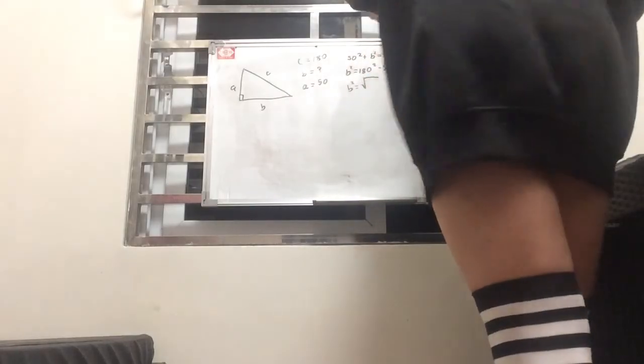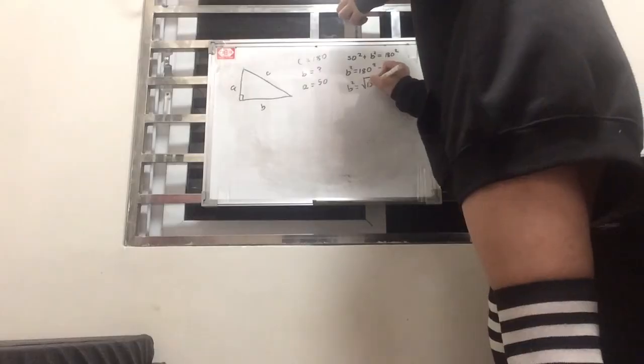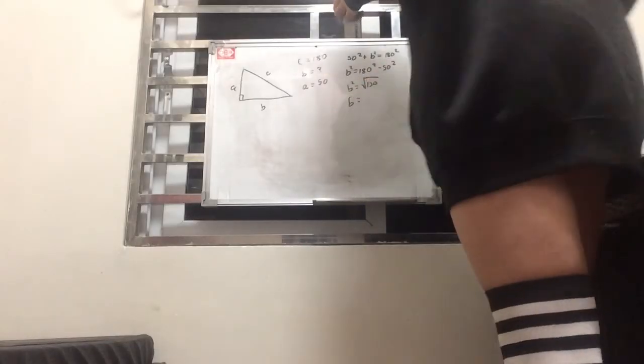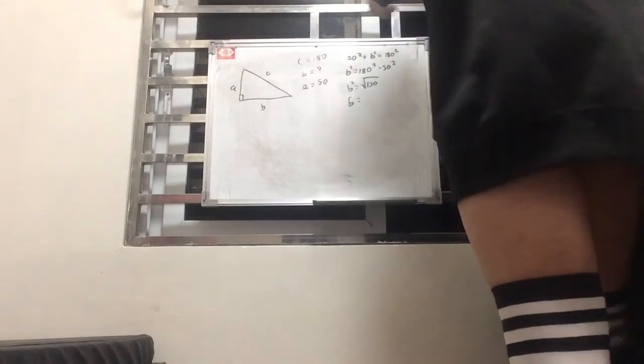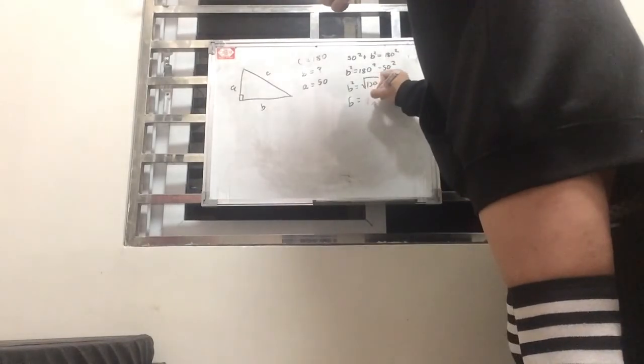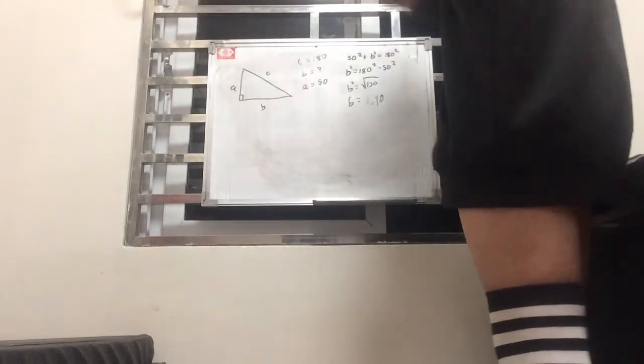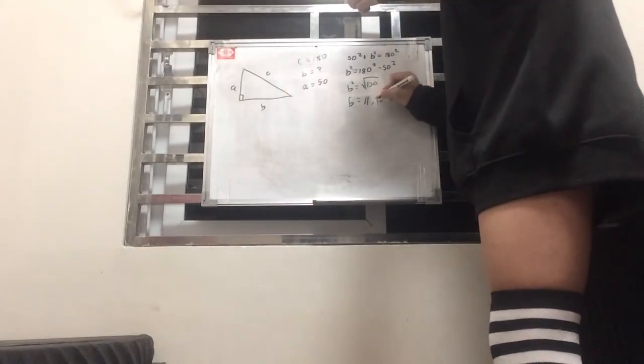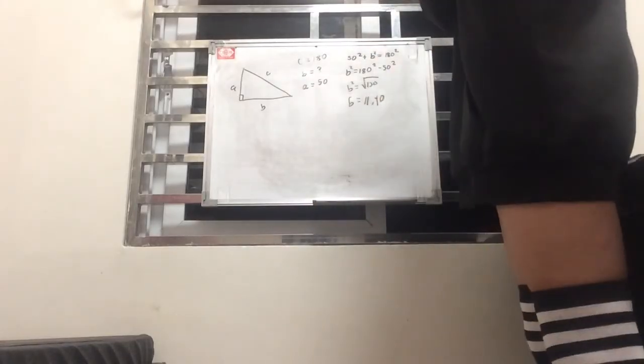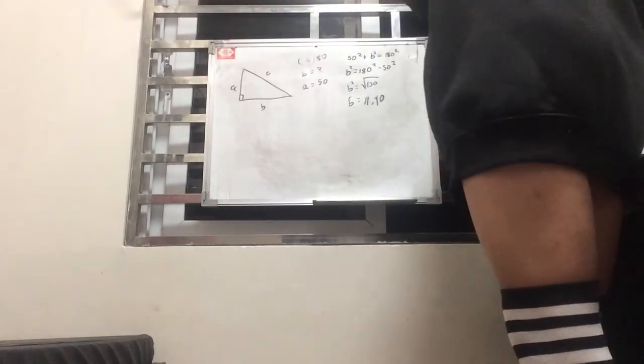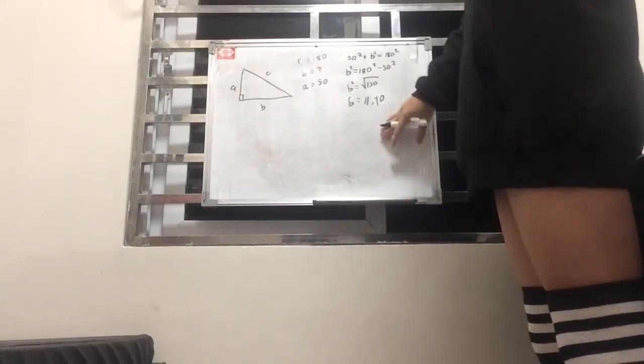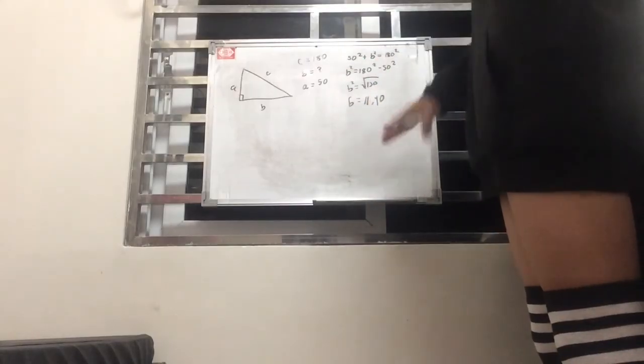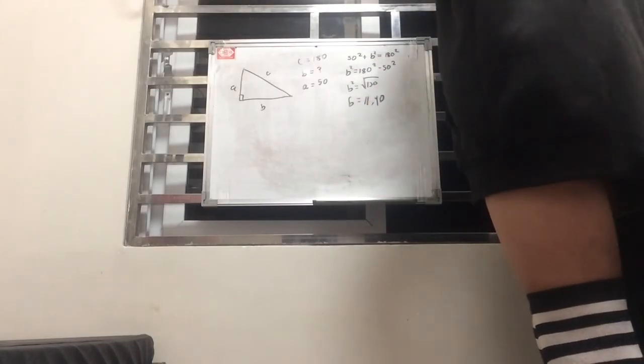So b² would be the square root of 130, and the square root of 130 according to my calculator is 11.40. Sorry if it's not quite seen on the board, but it's 11.40, or to be precise 11.40175425.